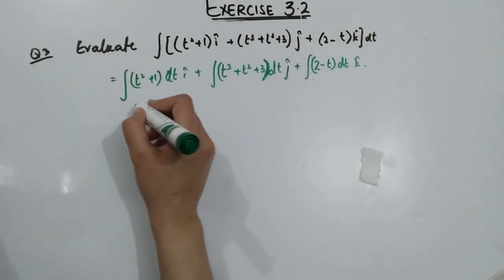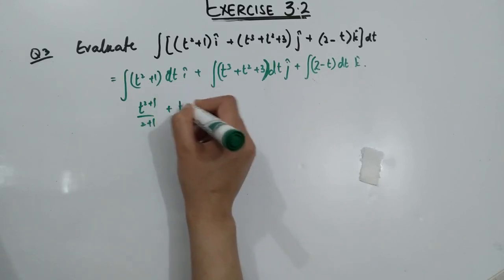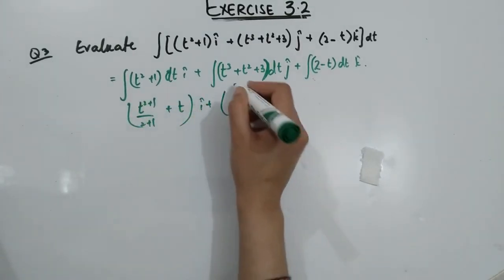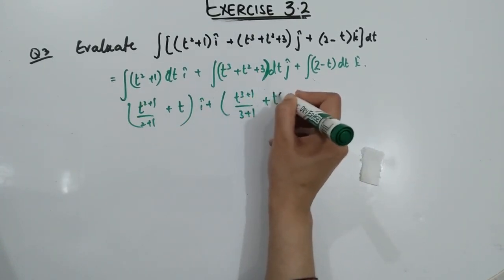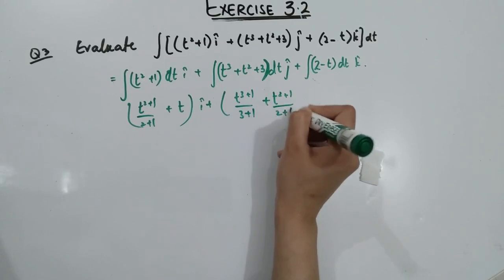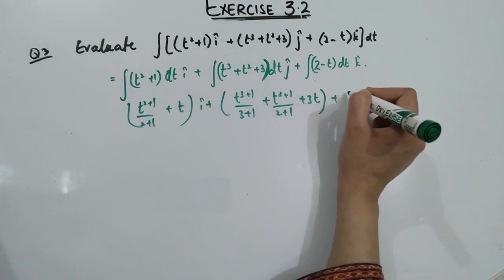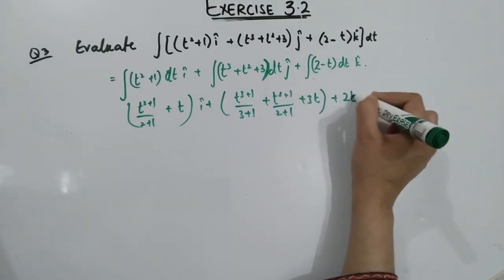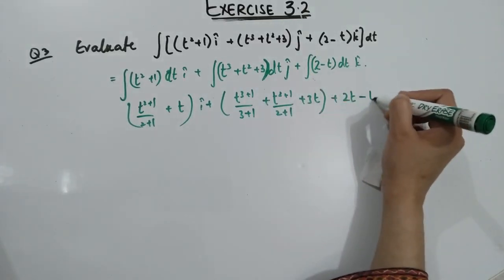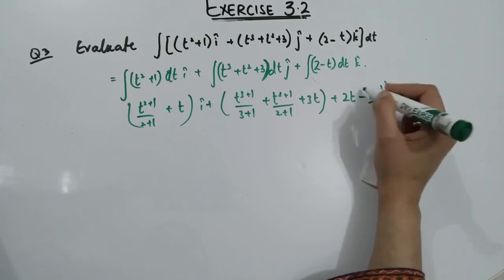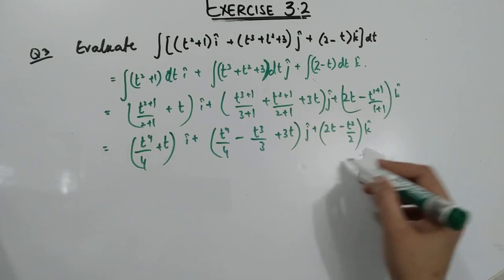Applying the power rule: T power 2+1 over 2+1, plus the integration of 1 gives T, for the i component. For the j component, T cubed gives T power 3+1 over 3+1, plus T power 2+1 over 2+1, plus 3, and the integration of 1 gives T. For the k component, the integration of 2 gives 2T, and applying the power rule gives T power 1+1 over 1+1. After simplification, you get the answer for this part.